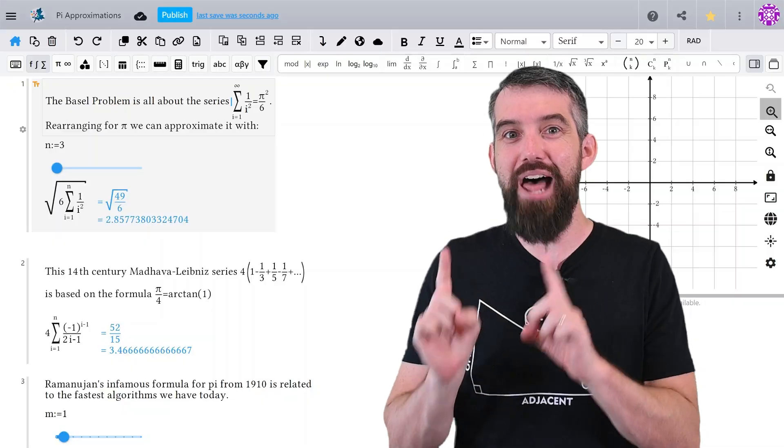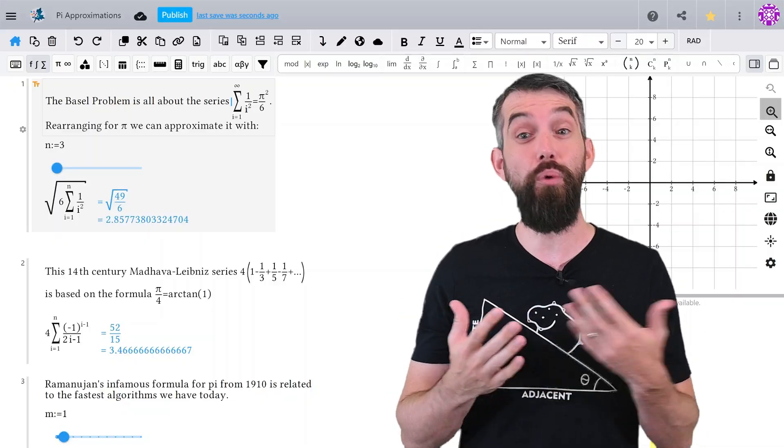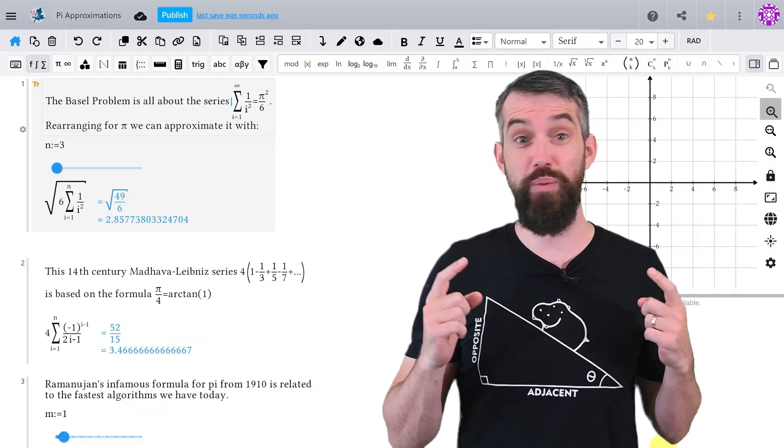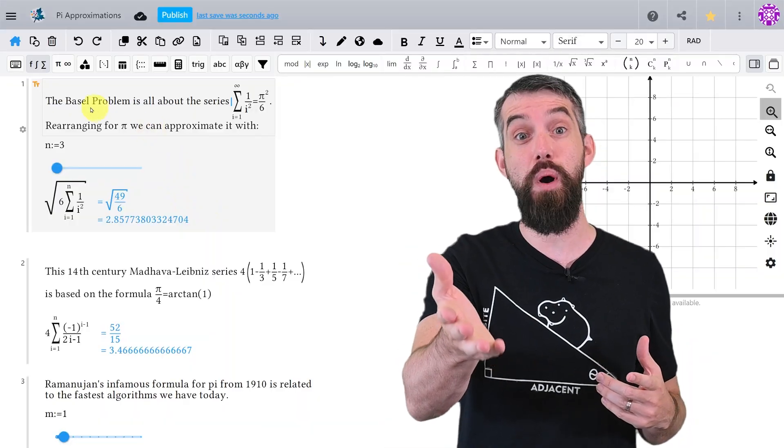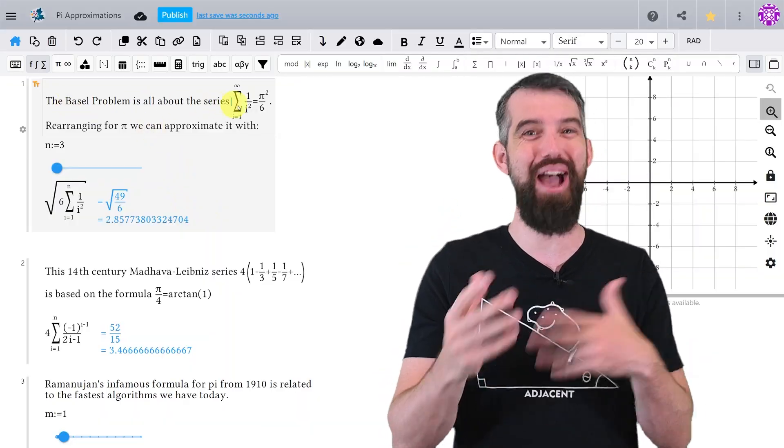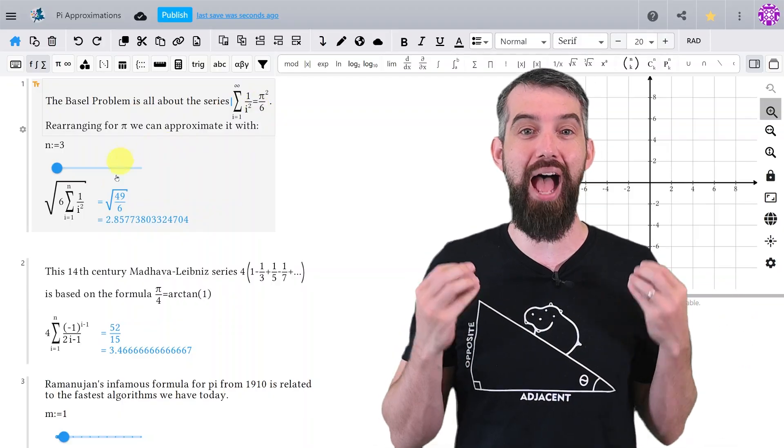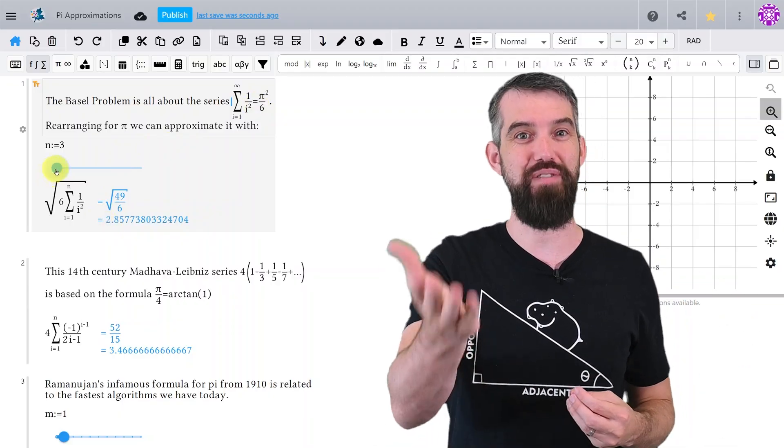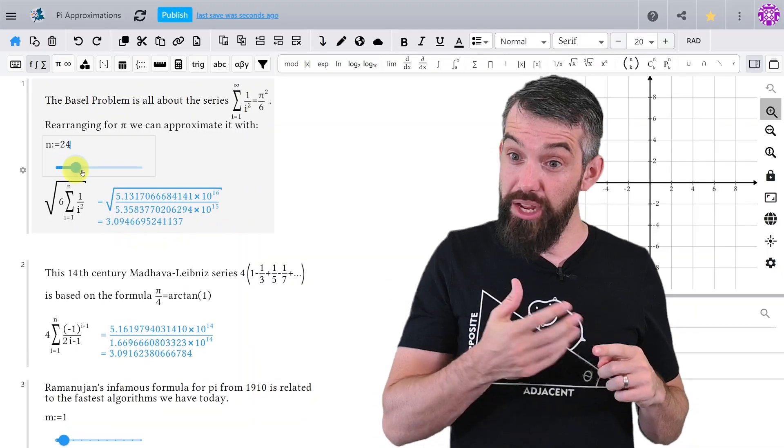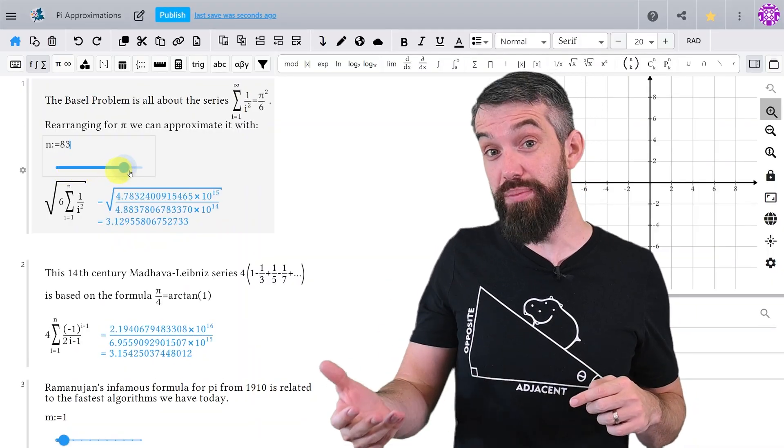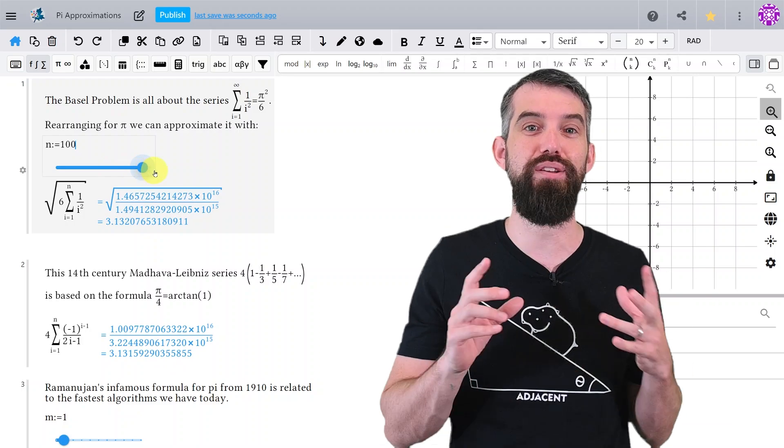And a lot of these other ways to approximate pi are all written as series. For example, with the Basel problem, I've done a video on this one before actually showing how to derive this formula, but it's the infamous one that the sum of 1 over i squared is just pi squared divided by 6. And you'll notice as I increase the number of terms in my series, I get closer to the value of pi.